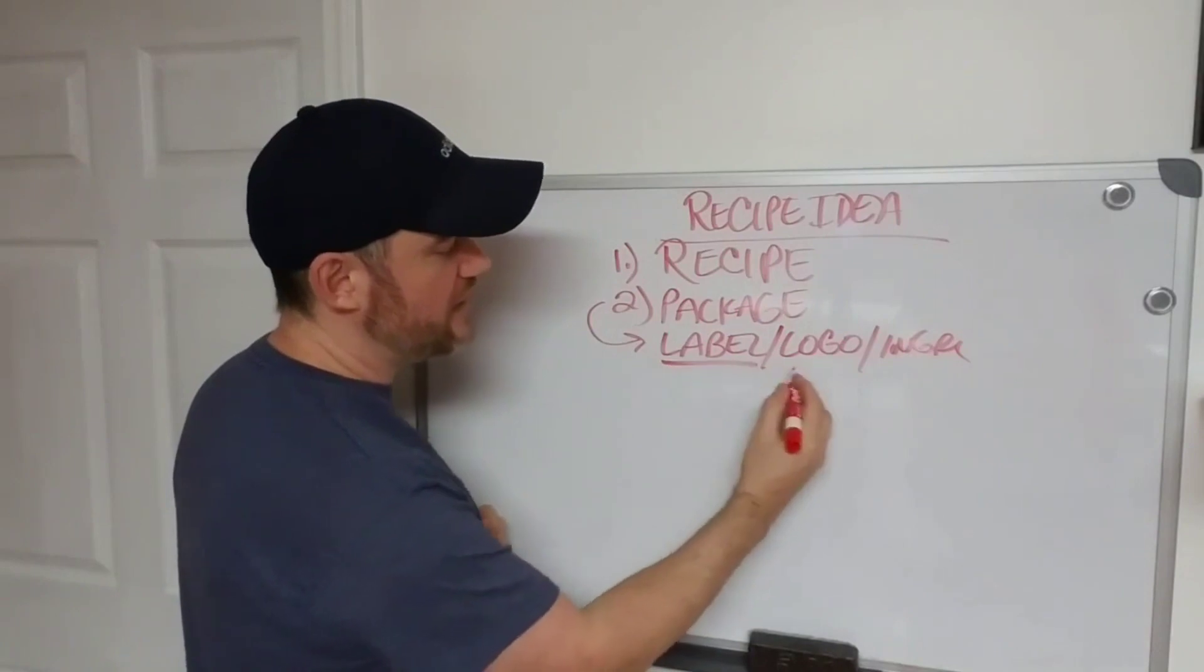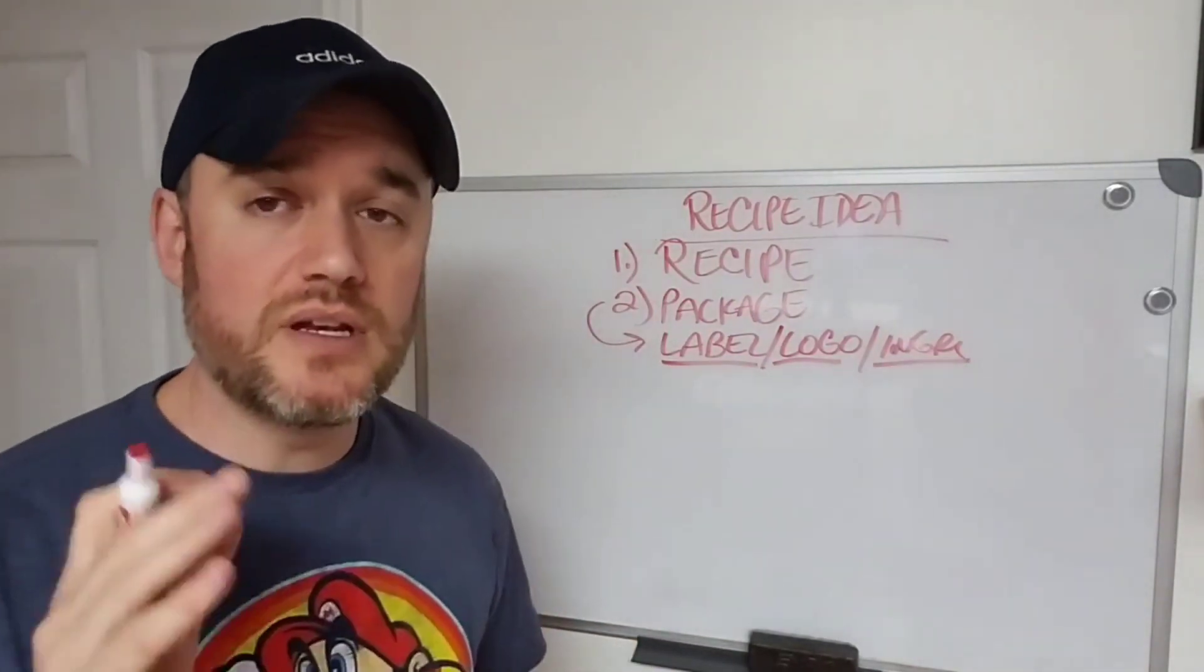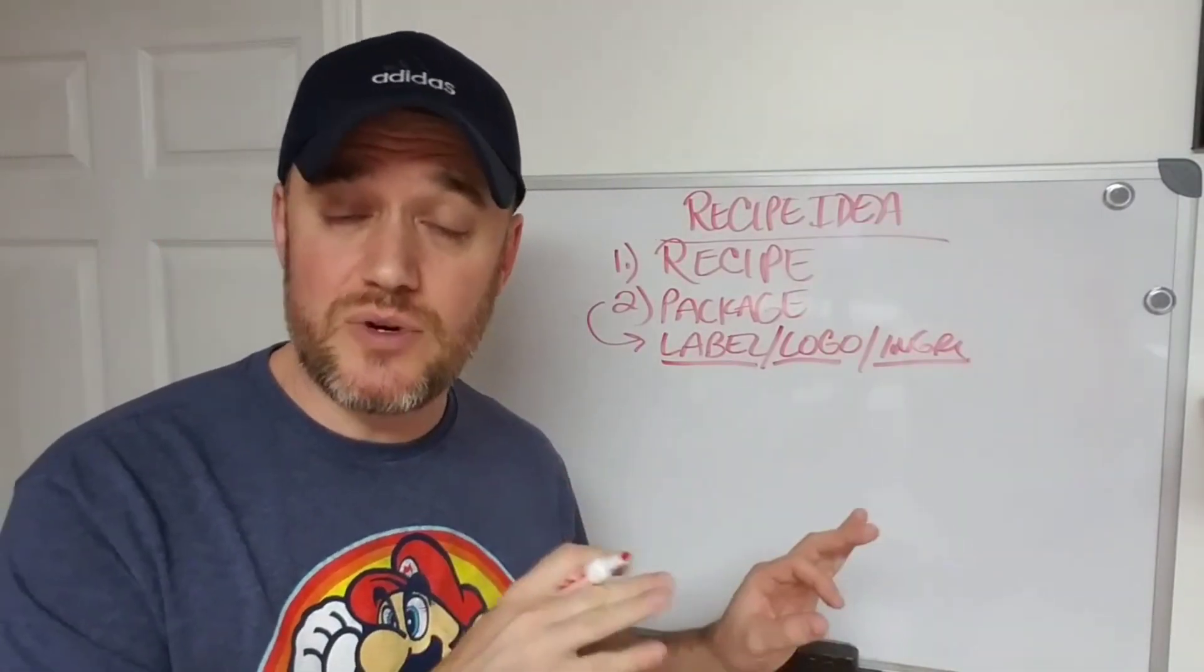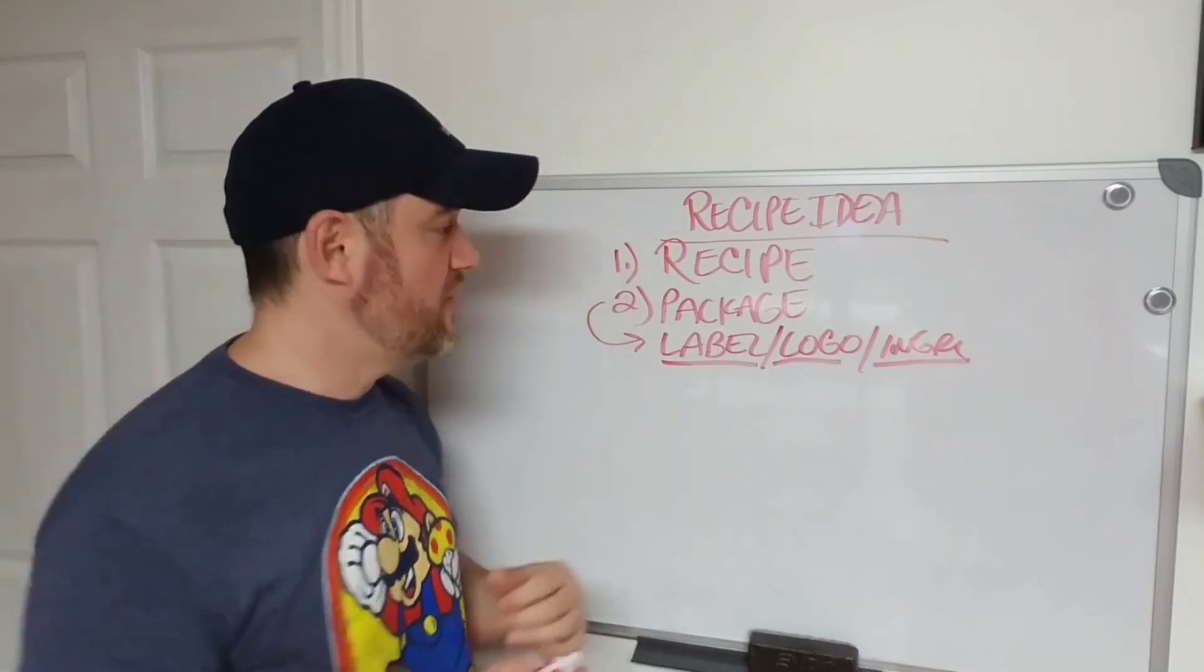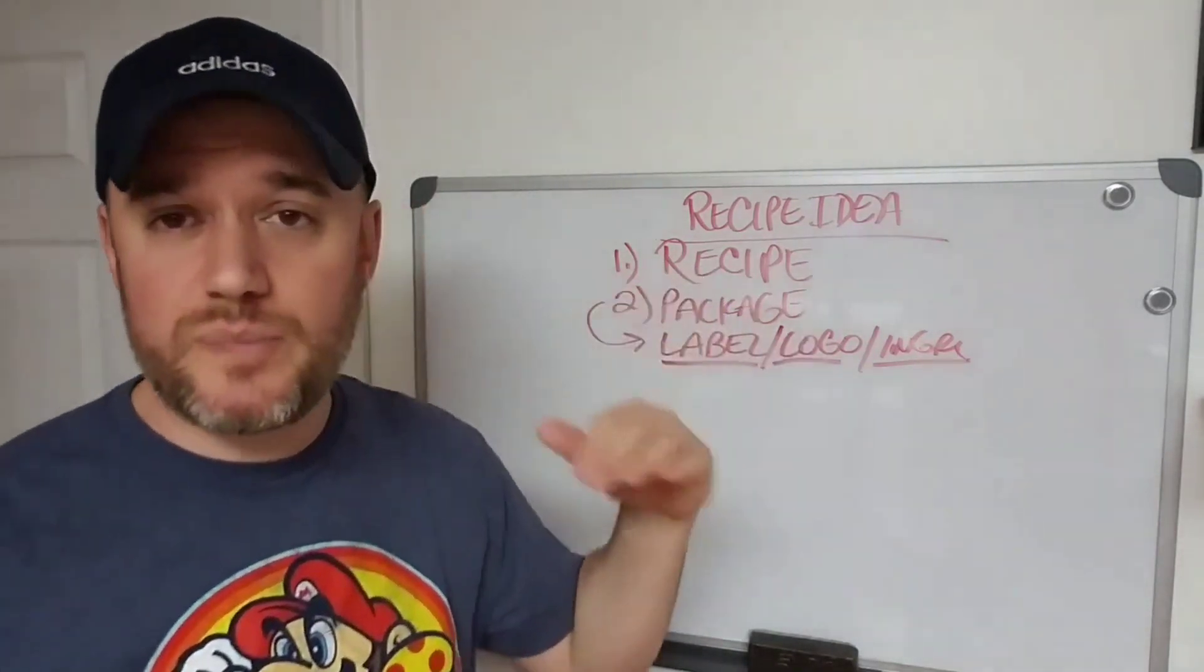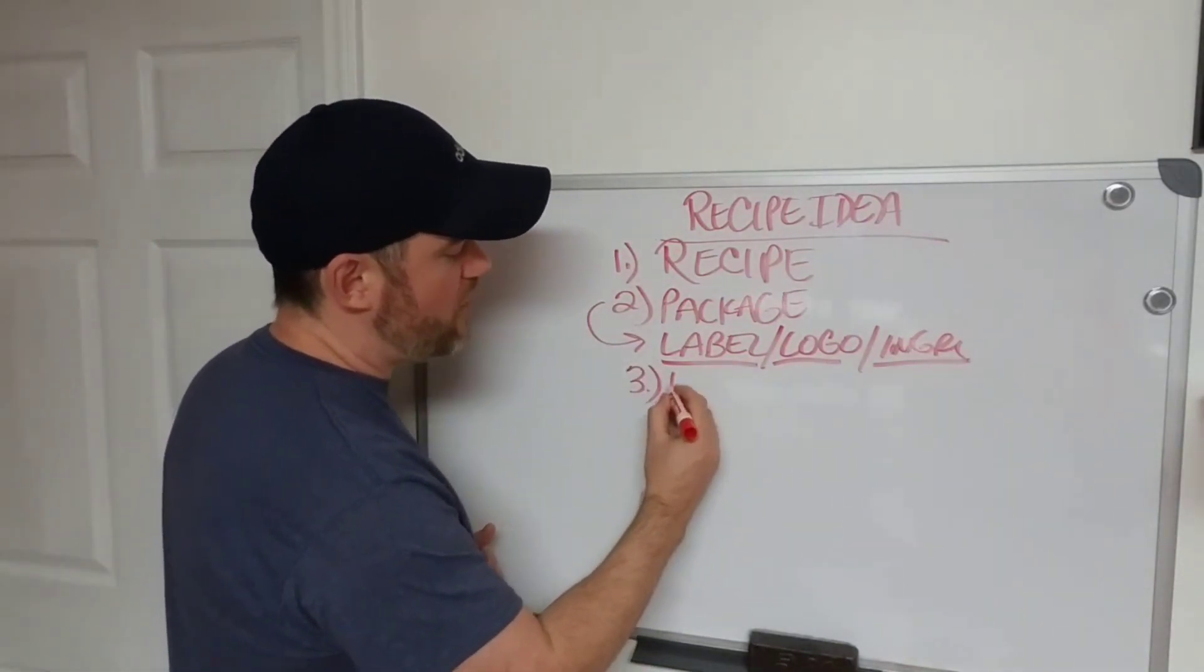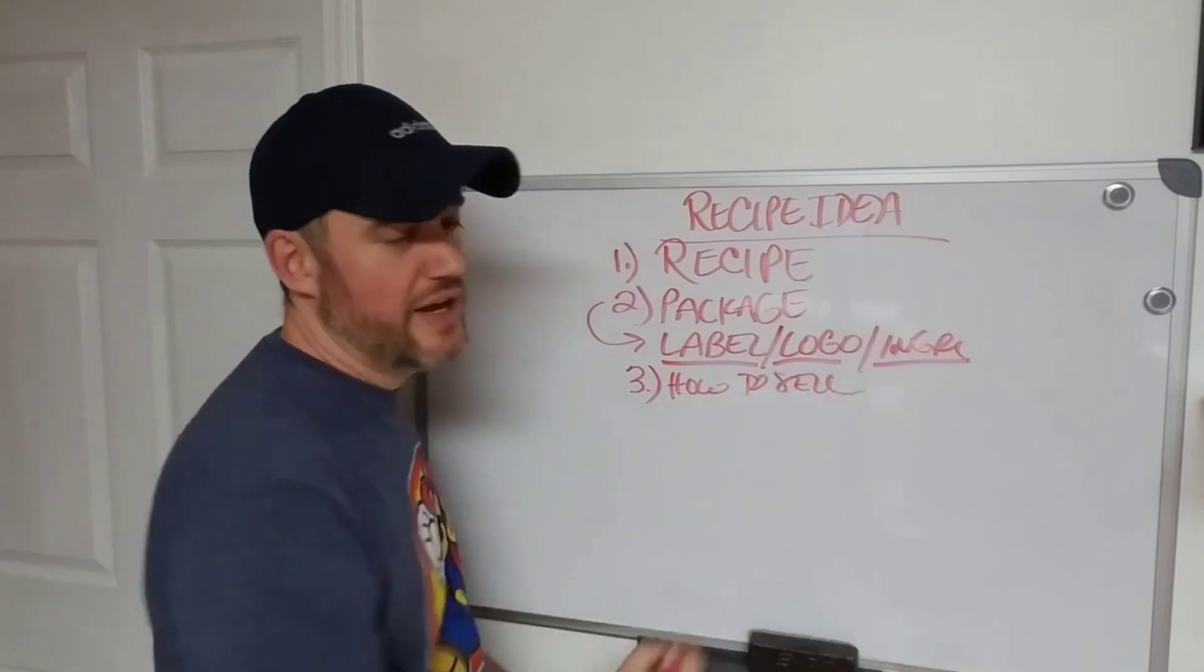So label, logo, ingredients—put a little bit of thought into it, a little bit of creativity. And you can contract that out. You can get someone to do it for you if you're not very creative in that sense. So recipe goes to packaging. The third one, how are you going to sell it?